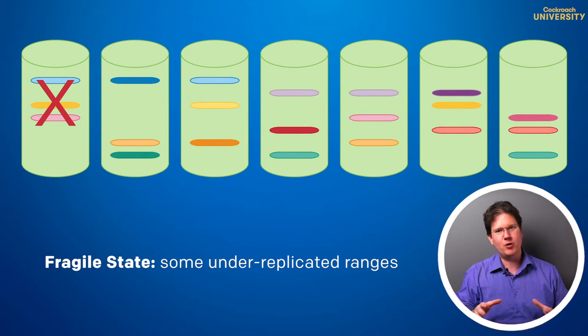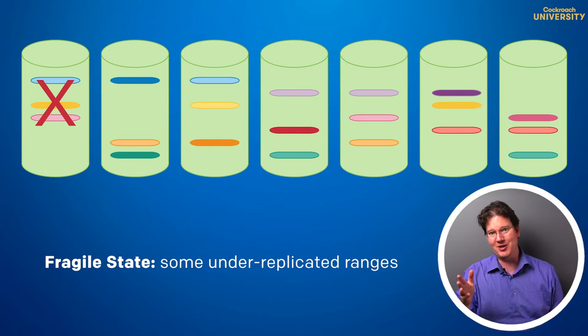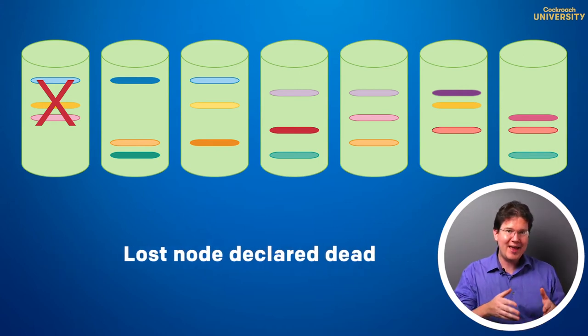Here, we still have more than three nodes up, and some of them don't have replicas from lost ranges. But they could. In a few minutes, five minutes by default, the cluster will stop waiting for that lost node to return and declare it dead. When that happens,